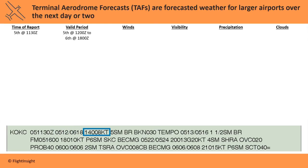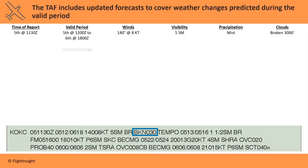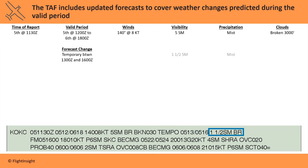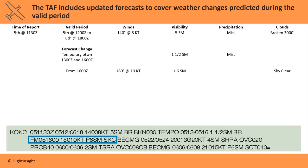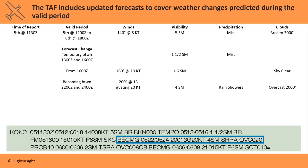The winds are forecast from 140 degrees at 8 knots, with 5 miles of visibility in mist, with the cloud ceiling broken at 3000 feet. Now even though the valid period is 30 hours, the TAF will show temporary changes to the forecast for parts of the valid period. Here's a temporary change between 1300 and 1600 Zulu — over this time period it predicts visibility to drop to a mile and a half in mist. After that temporary update from 1600 Zulu, the conditions are forecast to improve somewhat. While the TEMPO update is a weather condition predicted to come and go, a BECMG prediction says weather will transition over some time — between 2200 and 2400 Zulu — to these conditions.